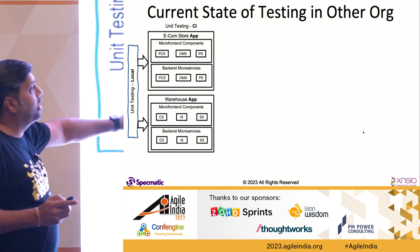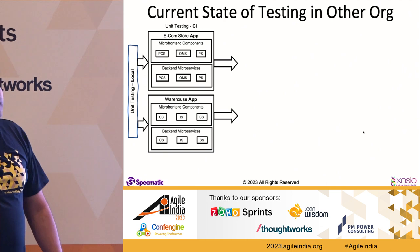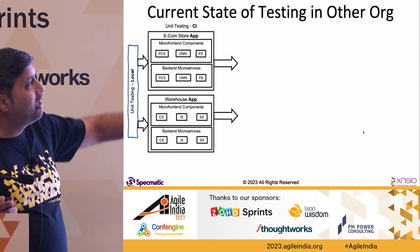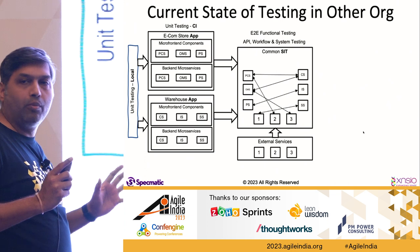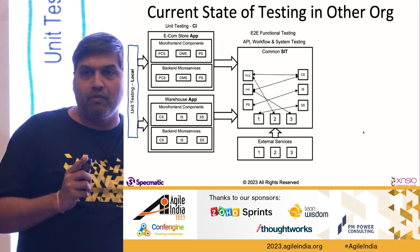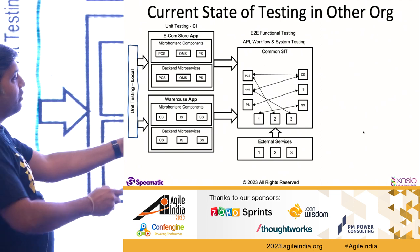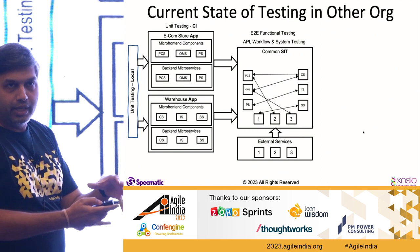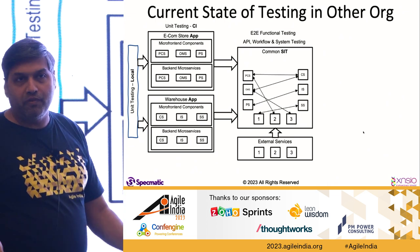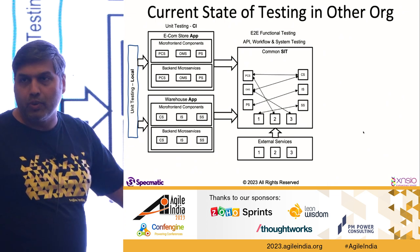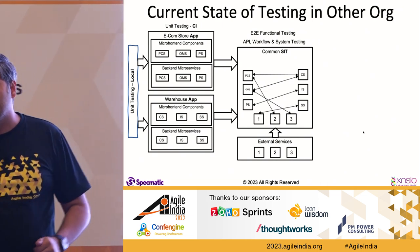Similarly, each service would do the same thing, then coordinate and deploy to a common system integration testing environment where all pieces and their external dependencies are integrated. There you can do end-to-end tests, system tests, API workflow tests. Then if everything passes, you deploy to pre-prod and finally take it to production.